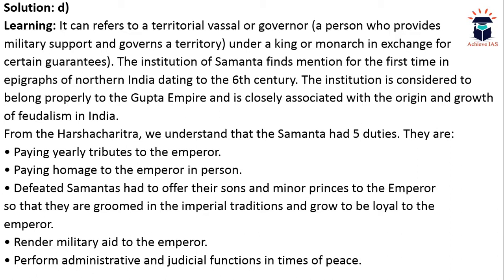The institution of Samanta is first mentioned in epigraphs of northern India dating to the 6th century. It is considered to belong properly to the Gupta Empire and is closely associated with the origin and growth of feudalism in India — the roots of medieval feudalism lie in this system. From the Harshacharita we understand that Samantas had five duties: paying yearly tribute to the emperor, paying homage in person, offering sons to be groomed in imperial traditions, rendering military aid, and performing administrative and judicial functions in times of peace.